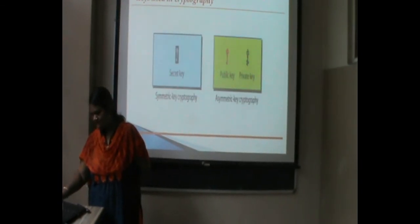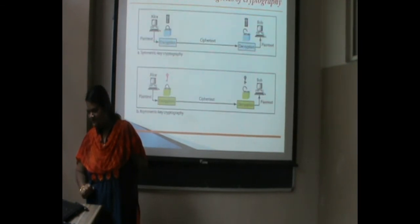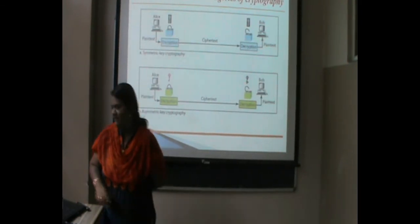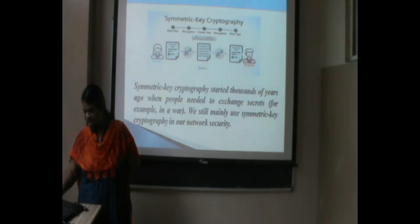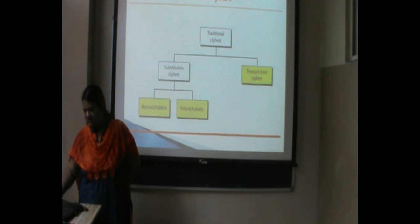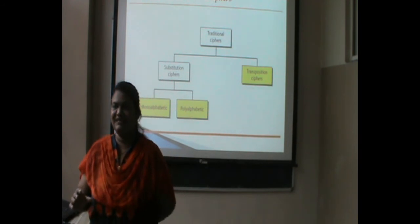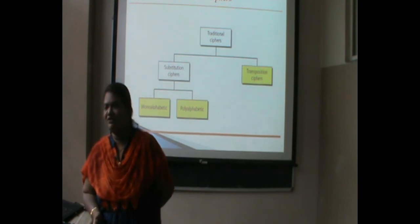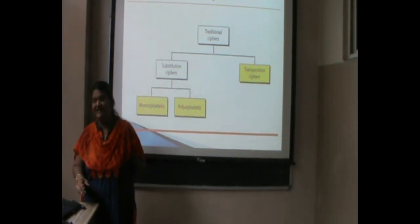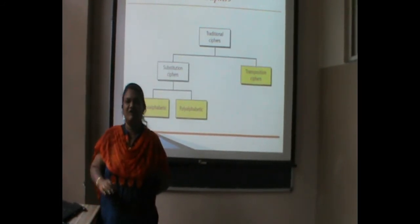Here we are using two keys — one secret key, and here public and private keys. This is the comparison of symmetric cryptography and asymmetric cryptography. Now, the simple techniques that we are using for encryption purposes — and most of these techniques are asked in our NET/SET Paper 1 exam also — such as substitution cipher. There are two traditional techniques: the substitution cipher and transposition cipher. In the substitution cipher, we use monoalphabetic and polyalphabetic techniques.